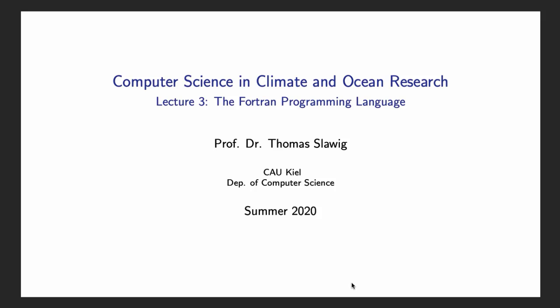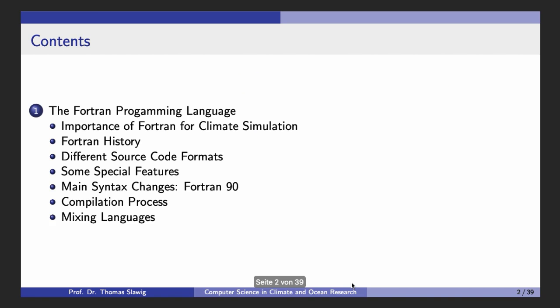This is the third lecture in the course Computer Science in Climate and Ocean Research. The topic of the lecture is the FORTRAN programming language. I will begin with the importance of FORTRAN for climate simulation and a little bit about FORTRAN history. There are different source code formats that changed during the history of the language. I will speak about some special features and the main syntax changes that came with FORTRAN 90. Then I will discuss the compilation process and how languages can be mixed, so how FORTRAN can be mixed with languages like C or used with Python or Java.